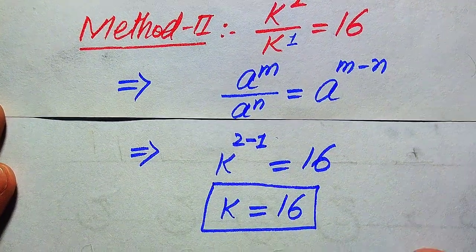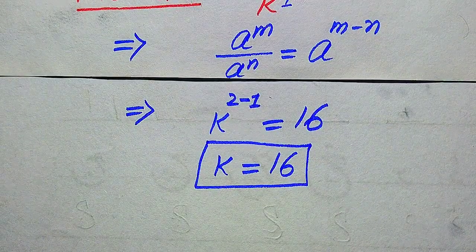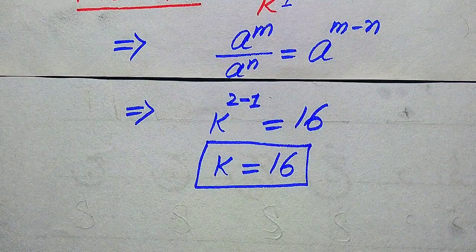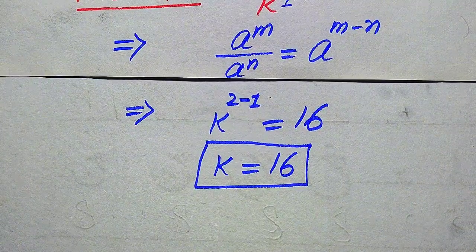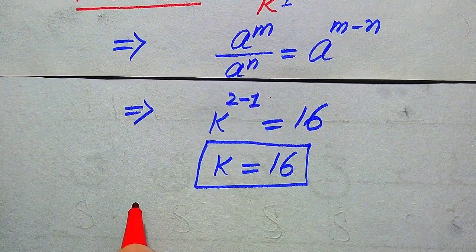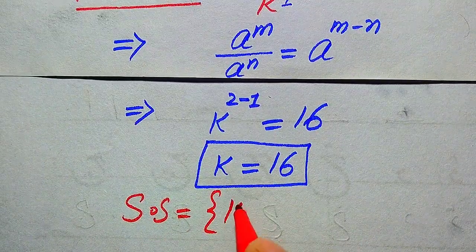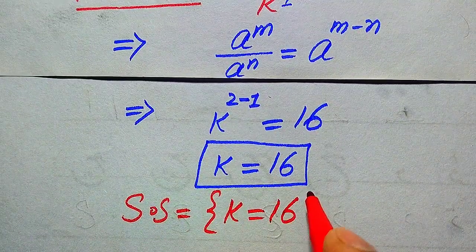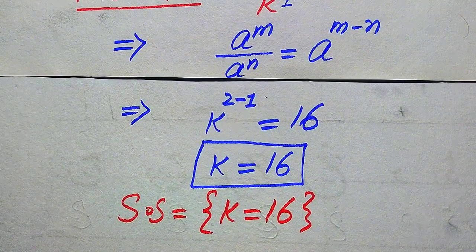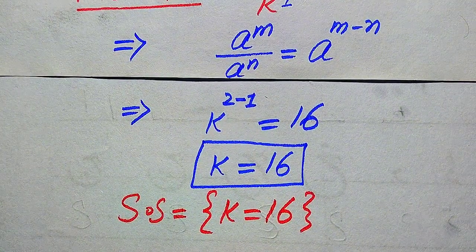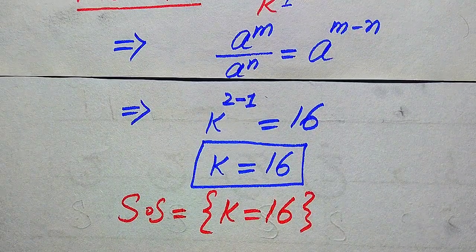Since we already verified in the first method that k equals 16 satisfies the given equation, we don't need to verify it again. The solution set of this problem is k equals 16 — the only solution from both methods. Thank you for watching, and please subscribe to my channel for more exciting videos.